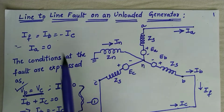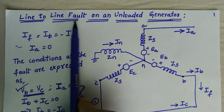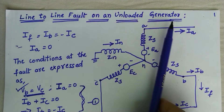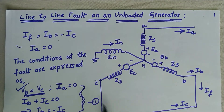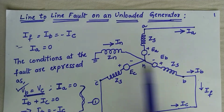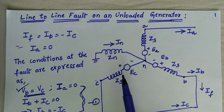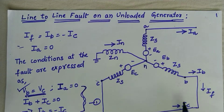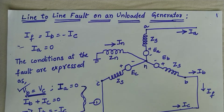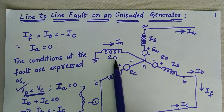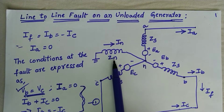Today the topic is line to line fault on an unloaded generator. This is the circuit diagram for an unloaded generator. Here we can observe a line to line fault between line B and line C. The neutral is connected to ground through some reactance Zn.